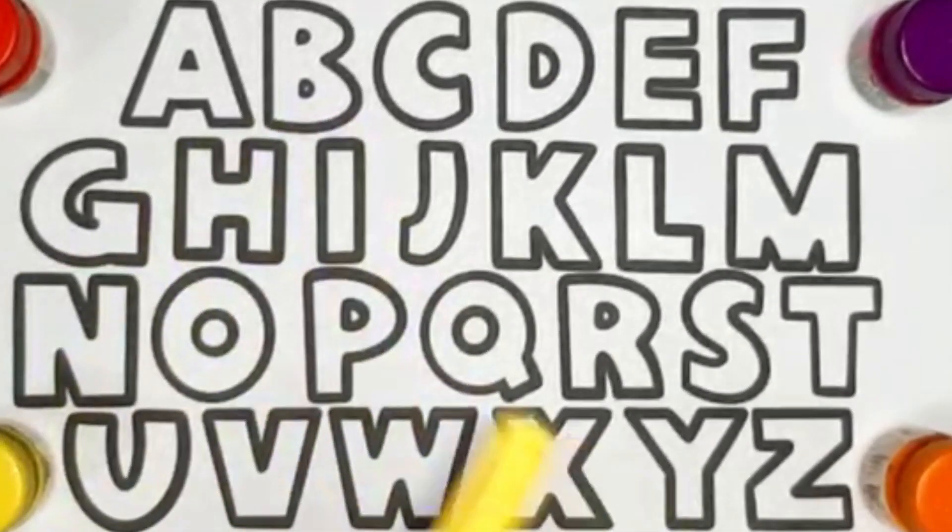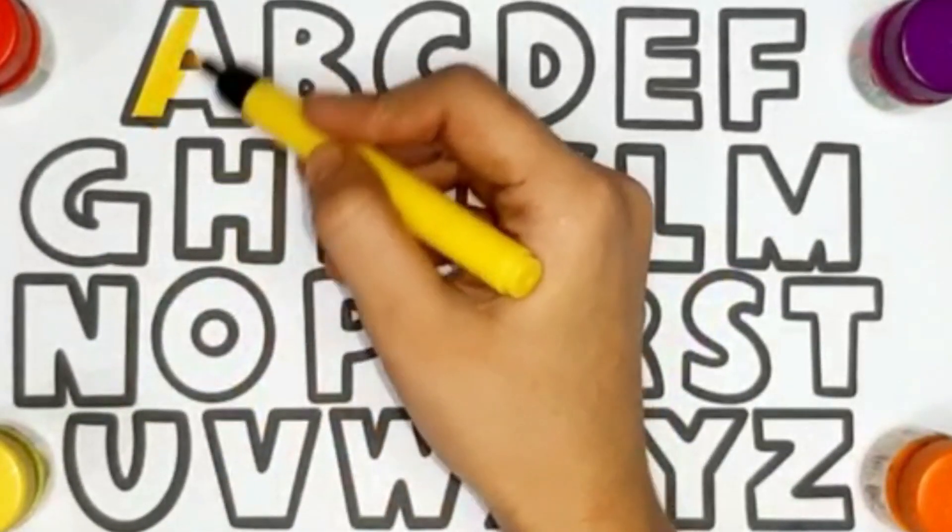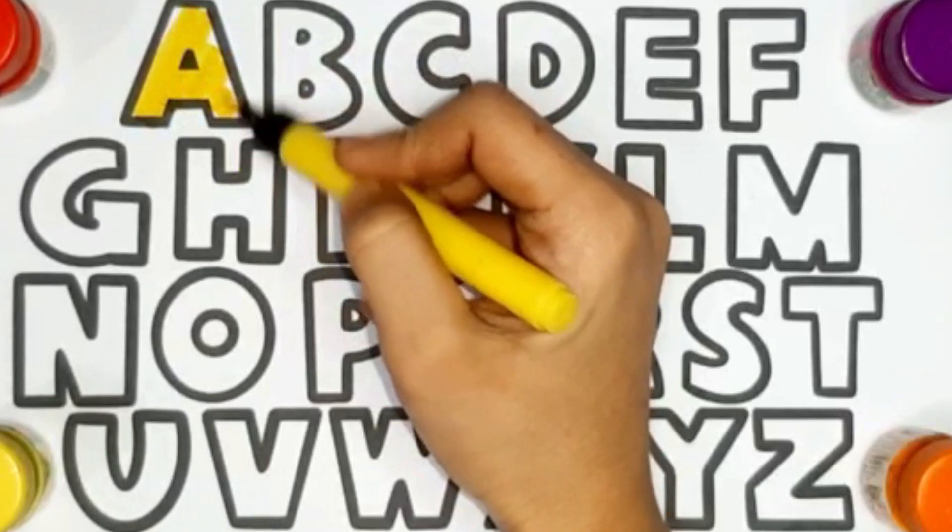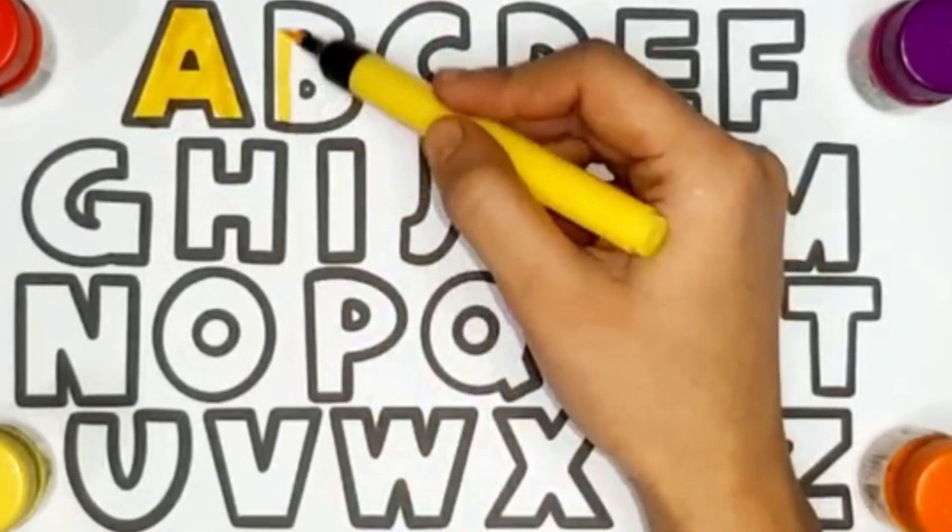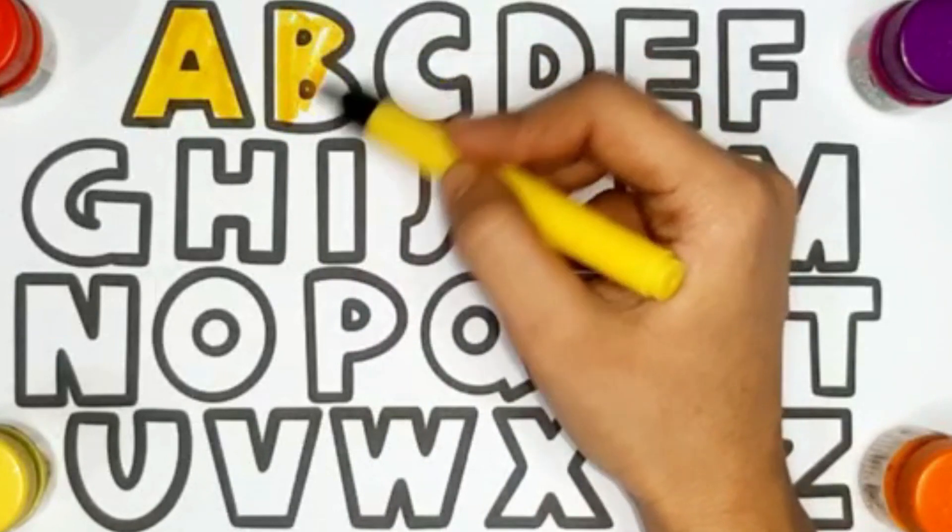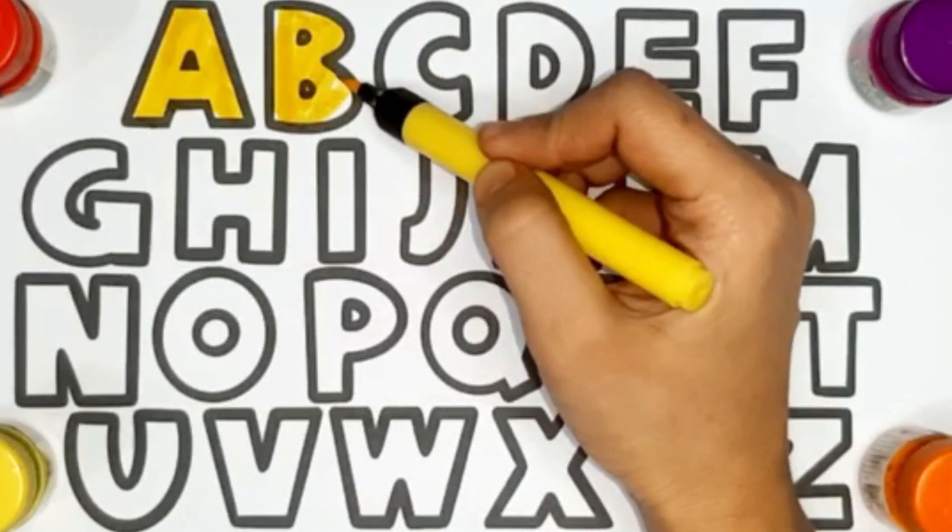Yellow color. A. A for apple. B. B for bat.